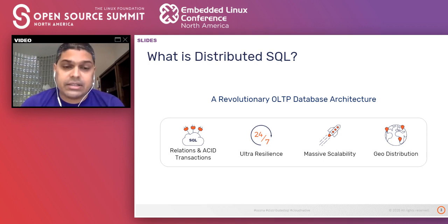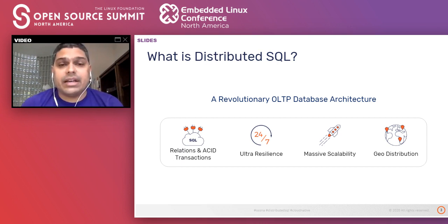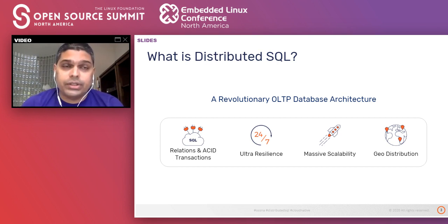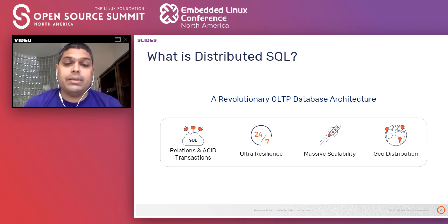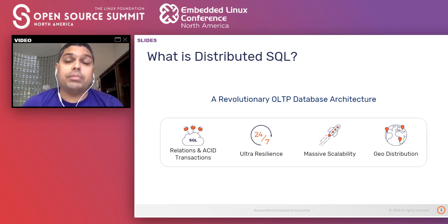Distributed SQL adds three additional capabilities typically absent in traditional relational databases. First is ultra resilience — the ability to natively failover and repair when infrastructure underneath the database nodes fails. Secondly, it's about massive scalability: the ability to serve an increasing amount of throughput by simply adding new nodes, also known as horizontal write scalability.